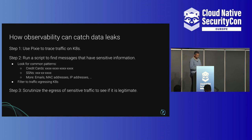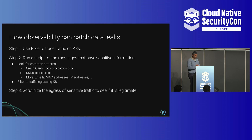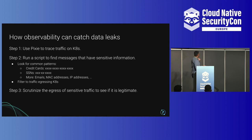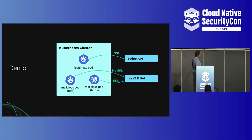How can observability catch data leaks? First, we use Pixie to trace all traffic on your Kubernetes cluster — we can do this for both encrypted and unencrypted traffic. Second, we run a script to find messages that have sensitive information, like credit card numbers, social security numbers, and email addresses. Third, we filter the traffic to things egressing your Kubernetes cluster. And lastly, we look at the egress of that sensitive data to see if it's actually legitimate. In our demo scenario, we have a Kubernetes cluster with a legitimate pod making SSL requests to the Stripe API, one malicious pod making HTTP requests to a post-test server, and another malicious pod making HTTPS requests.